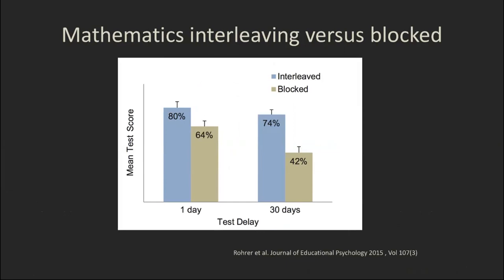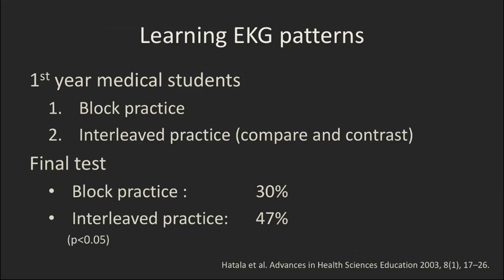In another experiment, middle school kids learned algebra and slopes of a graph — one group in block practice, one interleaved. The interleaved group did much better even one day out, and far better 30 days out, because they had to both identify what type of problem it was and solve it. In another study with first-year medical students learning EKG patterns — block practice learning all about left bundle branch block, then right bundle branch block, then sinus tachycardia versus all abnormalities mixed together — the interleaved group again did much better on the final test.